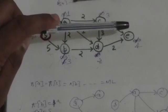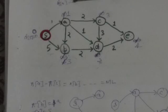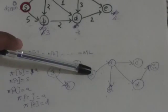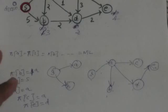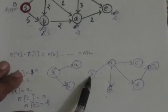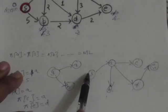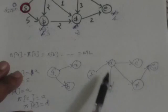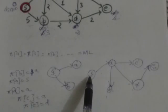Only one unprocessed vertex remains: vertex E. There are no outgoing edges from E to relax. We have now obtained the single source shortest path tree from vertex S. For example, the shortest path from S to E is S→A→D→E, and the shortest path from S to B is S→A→B.